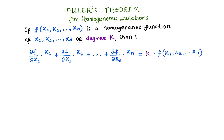So, Euler's theorem for homogeneous functions simply states that if we take the partial derivative of the function with respect to each individual independent variable, the summation of those partial derivatives multiplied by each individual variable must equal the degree of homogeneity multiplied by the function itself.